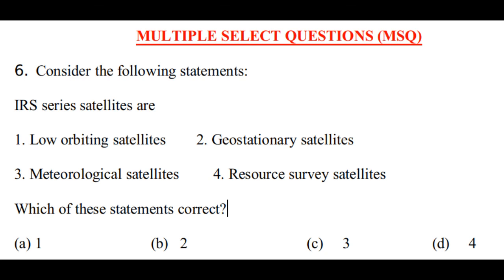IRS means Indian Remote Sensing Satellites. They are a series of earth observation satellites built, launched, and maintained by ISRO — Indian Space Research Organization. They are resource survey satellites because using IRS we get data about agricultural research, geographical mapping, coastal hydrodynamics, water quality survey, etc. They are also geostationary satellites. So the options to mark are A, B, and D.